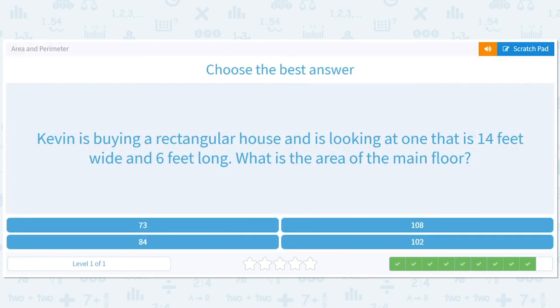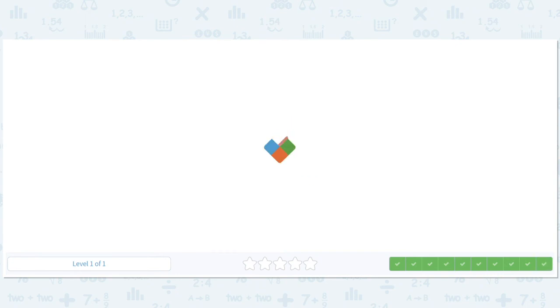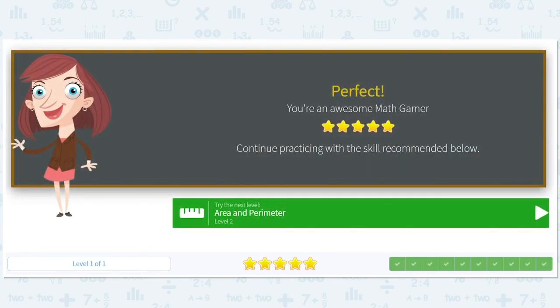So the area is 84. All right, guys. See if you can calculate some areas in your house or maybe for your desk or your book or whatever. Get a ruler and have some fun. All right. I'll see you next time.